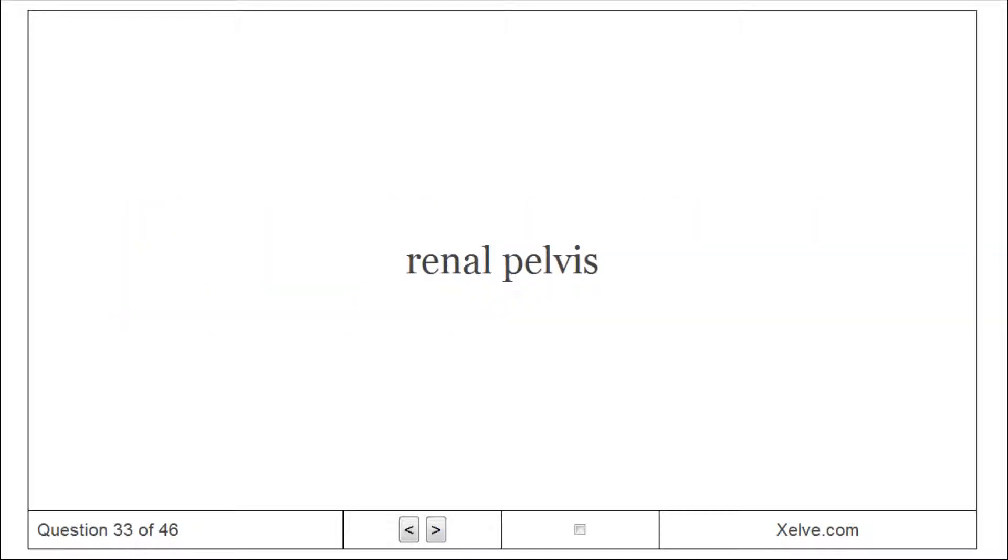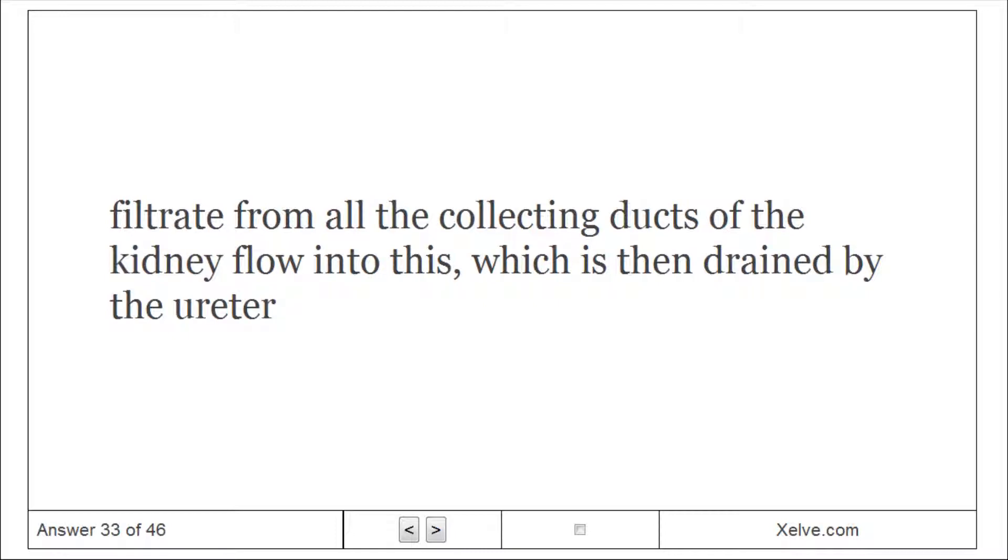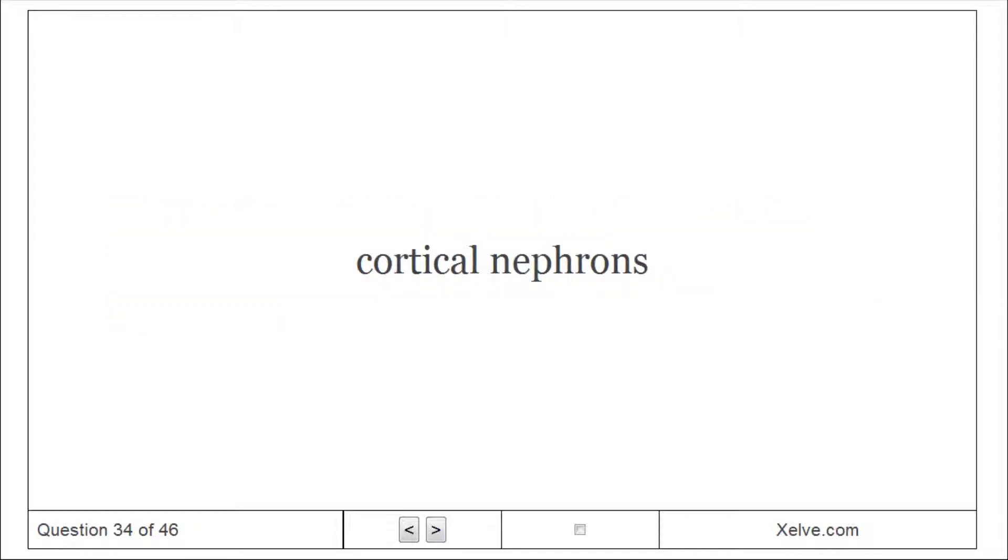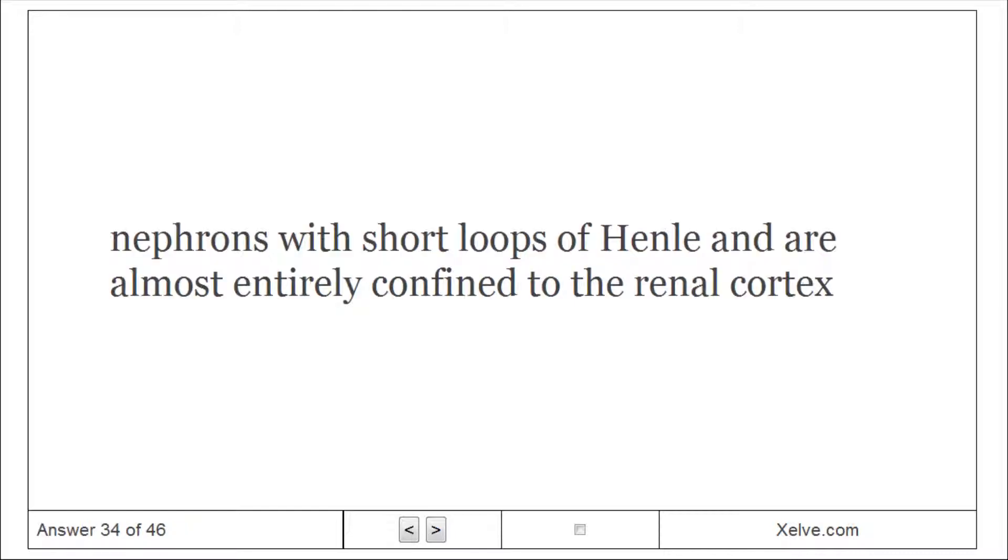Renal pelvis: Filtrate from all the collecting ducts of the kidney flow into this which is then drained by the ureter. Cortical nephrons: Nephrons with short loops of Henle and are almost entirely confined to the renal cortex.